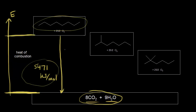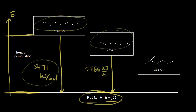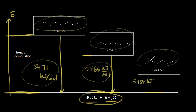The energy level for octane is determined from those values. For 2-methylheptane, the products energy level is the same, but the heat of combustion is around 5,466 kilojoules per mole. Since we have a smaller heat of combustion, the energy level for 2-methylheptane must be lower than for octane. Finally, for 2,2-dimethylhexane, the heat of combustion is around 5,458 kilojoules per mole. Since we have an even smaller value, the energy level for 2,2-dimethylhexane is even lower.